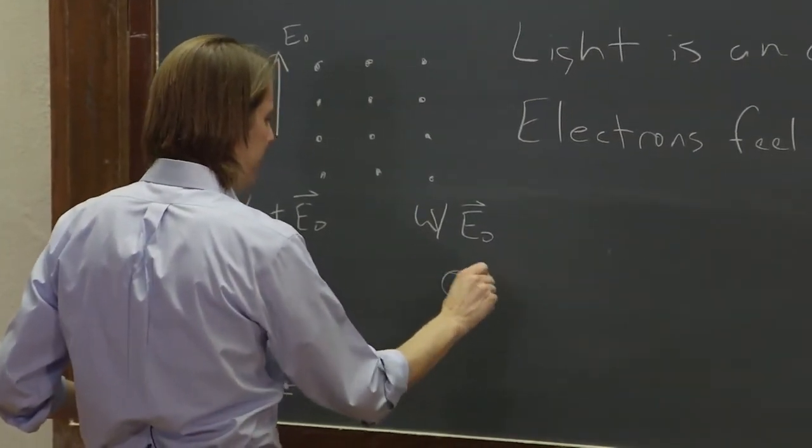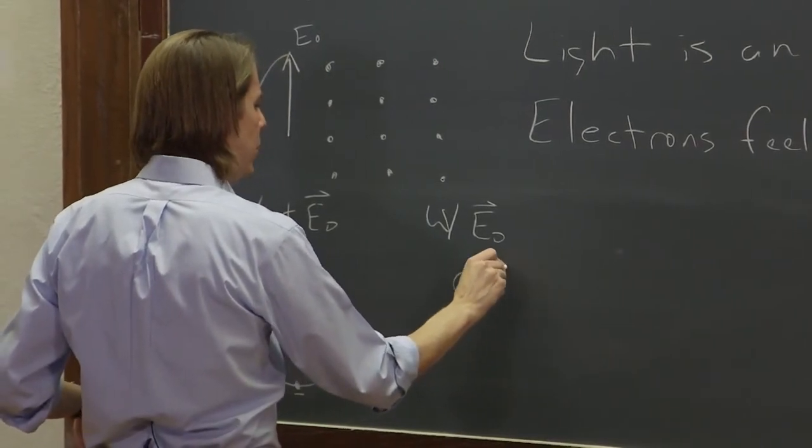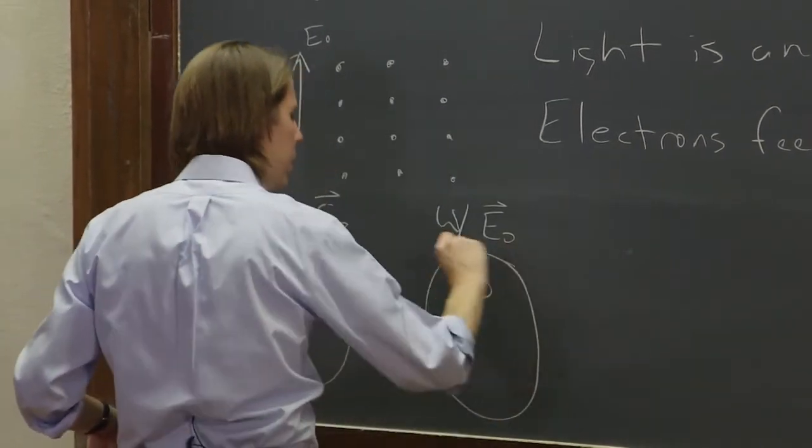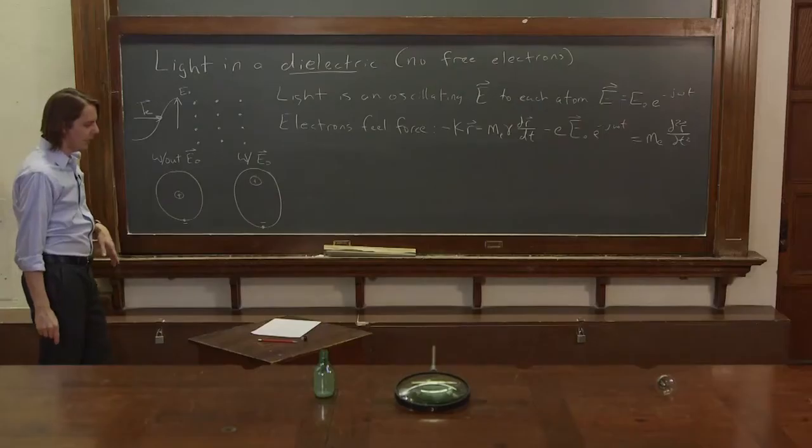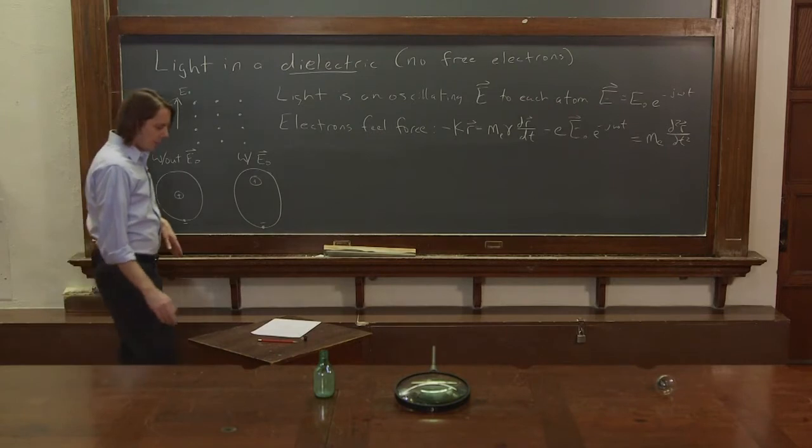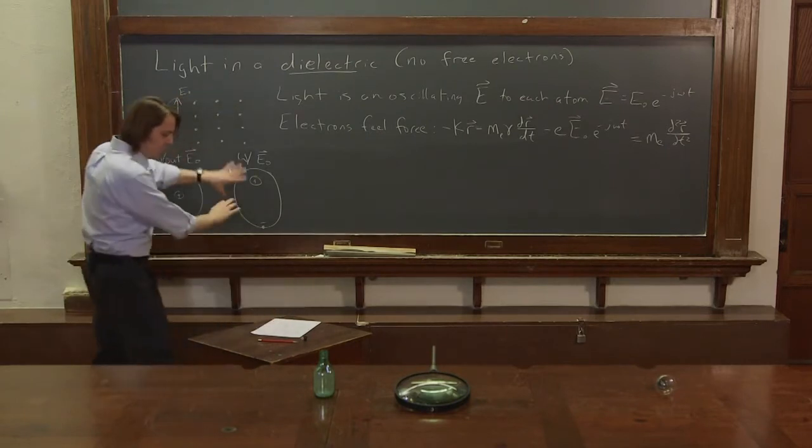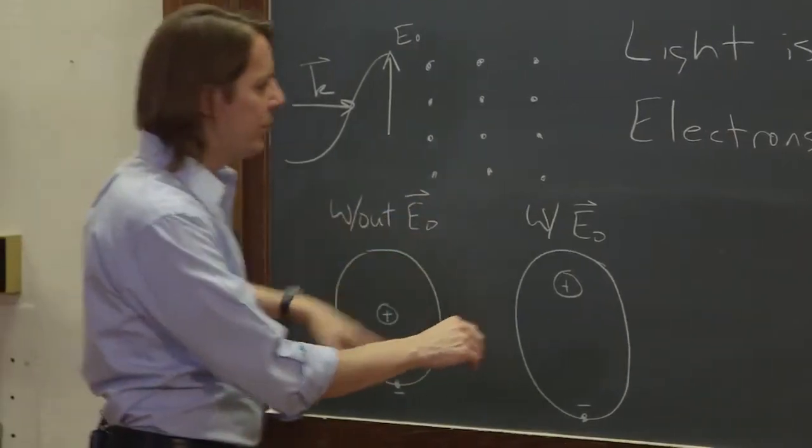You would have your positive charge end up here, and your cloud deformed, where the negative charge is down there. And let's see, so the electrons will move in this way to create what we call a dipole moment.